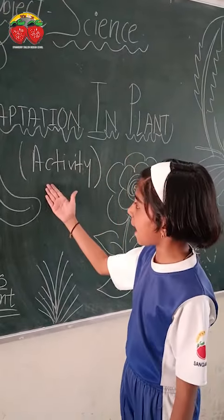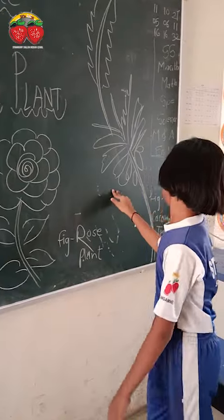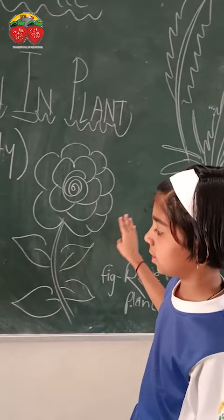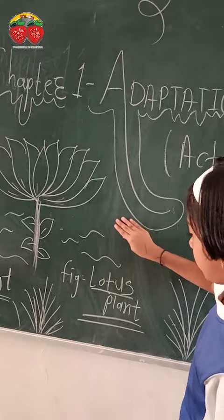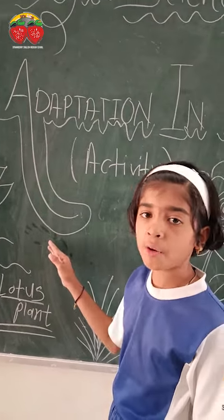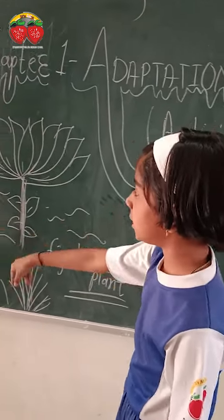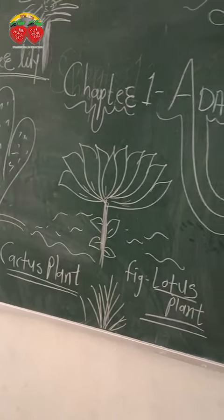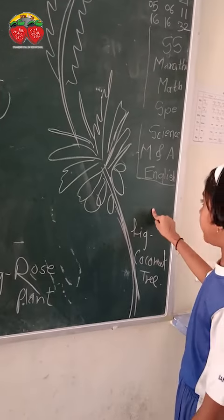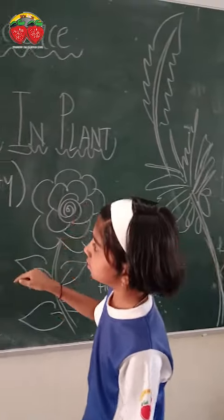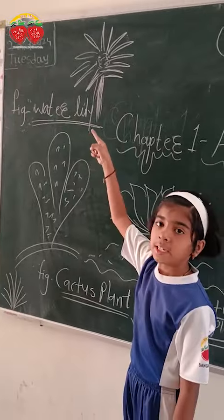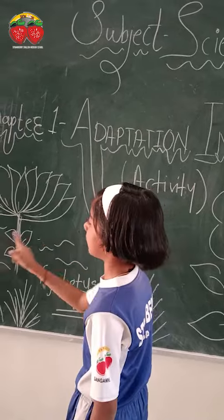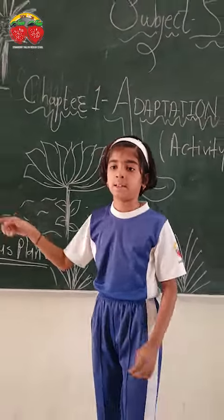Adaptation in plants. This is a coconut tree. This is a peepal tree, which is found in water. This is a cactus plant found in the desert. This plant is found in the sea or ocean. This is a water lily, which is also an aquatic plant. This is also aquatic. This is a terrestrial plant.